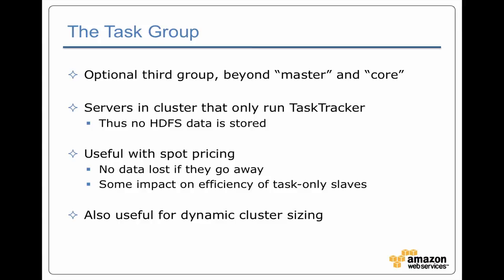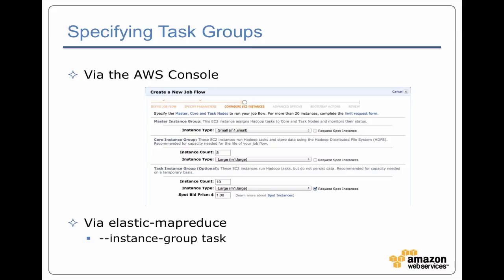The task group is also one of the best ways to dynamically resize your cluster, and this is something you can only do with the command line client, not the AWS console. You can do --add-instance-group task or core, and specify how many instances of what type and what bid price you want. To set up a task group via the AWS console, it's that third section when you're creating a new job flow — you say you want 10 M1 larges with spot pricing for the task instance group, while the core instance group uses on-demand pricing.